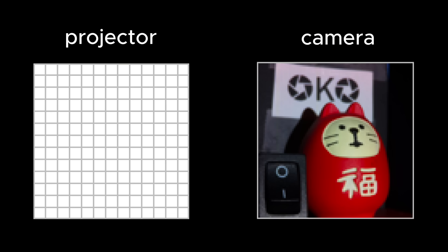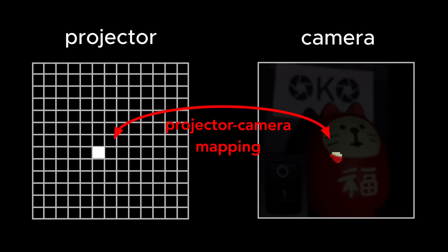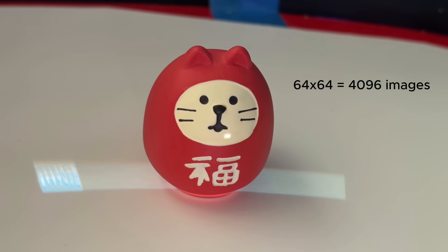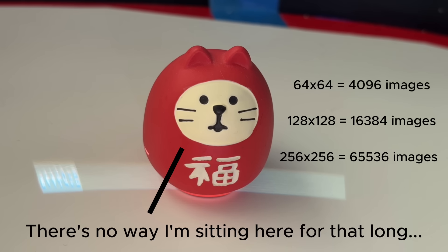When all the projector pixels are on, the whole scene is illuminated and you can't tell which projector pixels correspond to a pixel on the camera. If I illuminate the scene with one small square from the projector — we'll call this one illumination pixel — and capture a photo, I can describe the mapping between that one projector pixel and the corresponding pixels on the camera. But that's just one point. I could scan the entire scene one point at a time and collect an image for each illumination point, but that would require a ton of images.